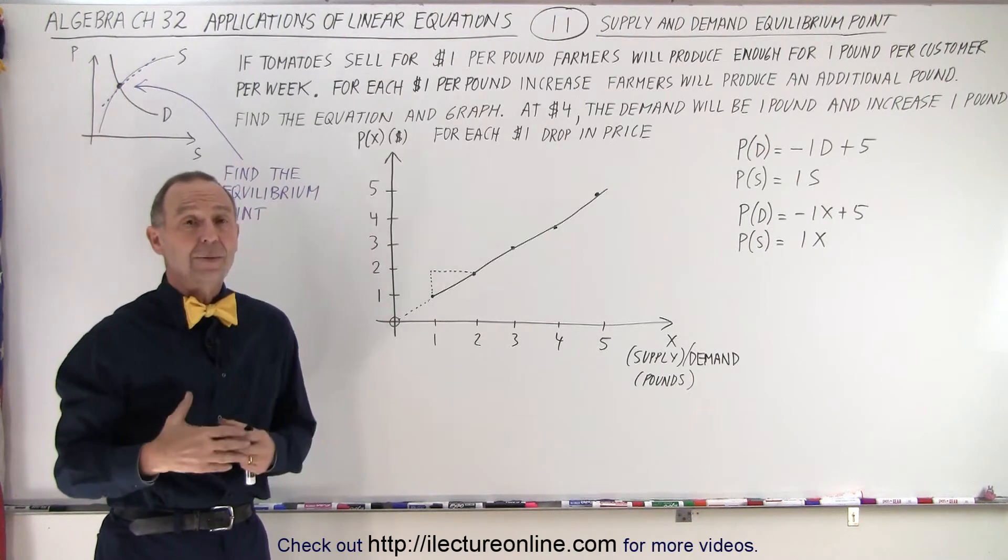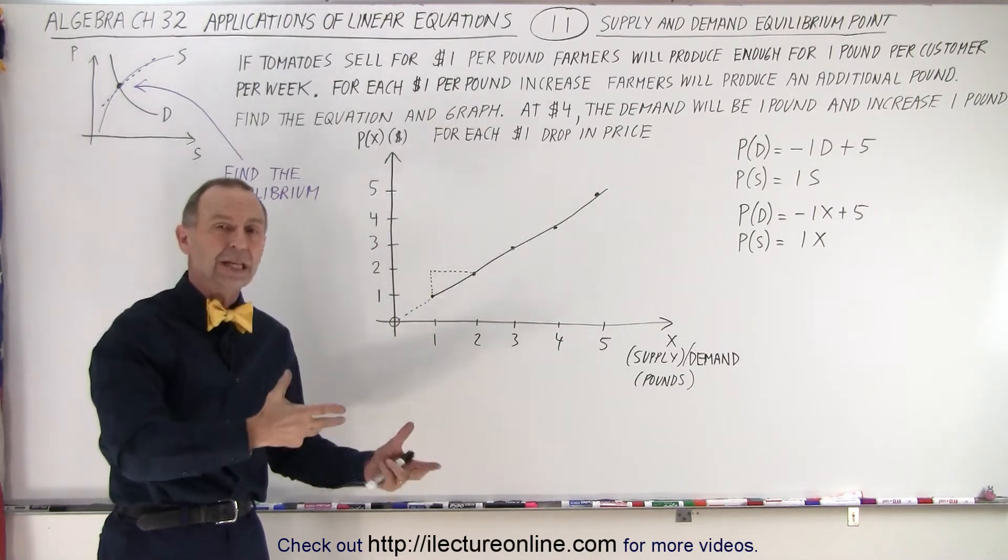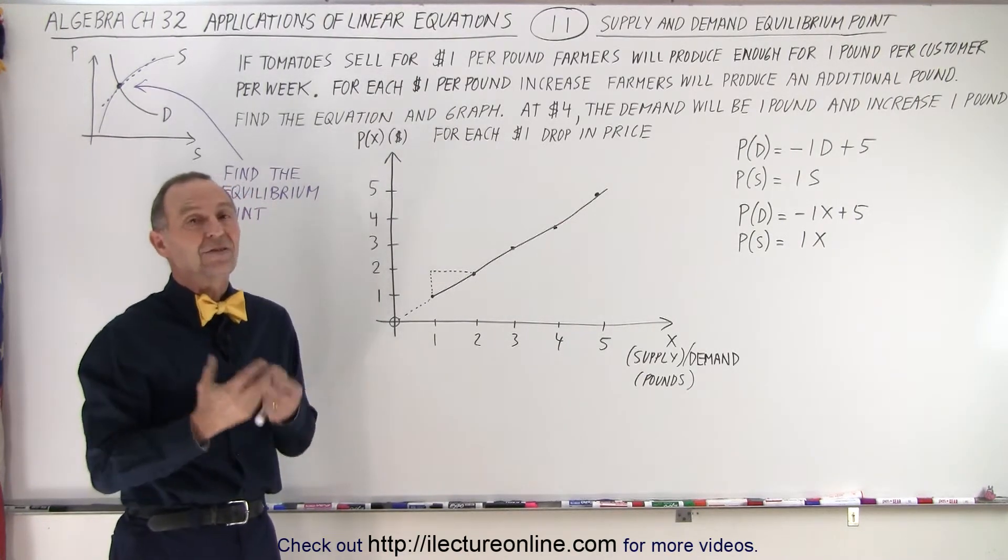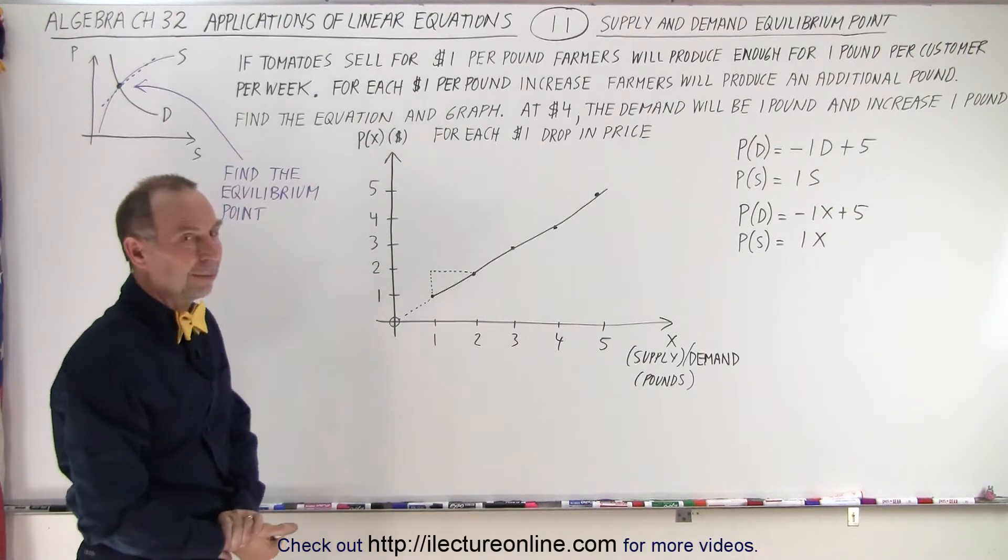If the supply is greater than the demand, then there'll be a surplus, and then the price will fall so that demand will increase. Typically, the price will always change until the amount demanded is equal to the amount supplied by the growers, in this case when we're talking about tomatoes.